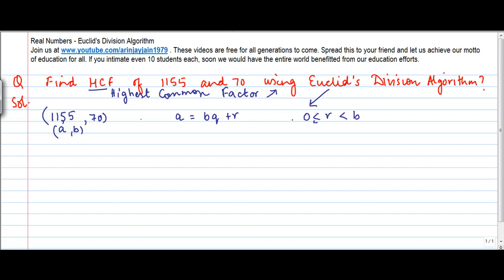So here we have 1155 equals 70 times q plus r. Now if that's the case, if this number is divisible by 70, then you can also write 1155 as what?